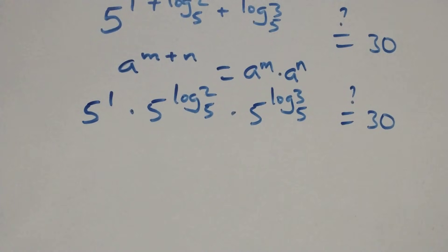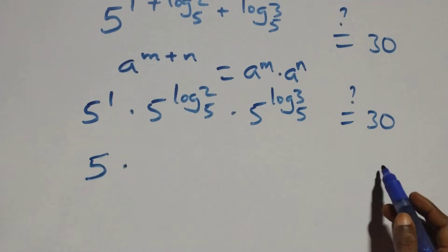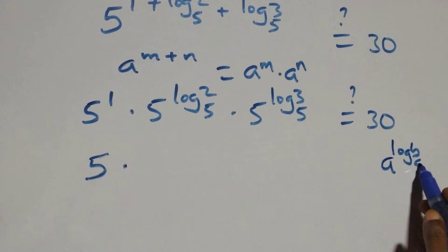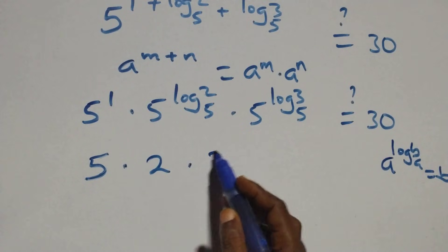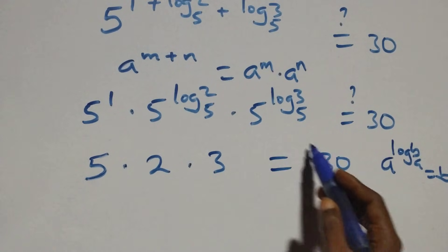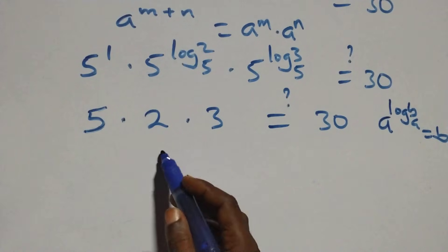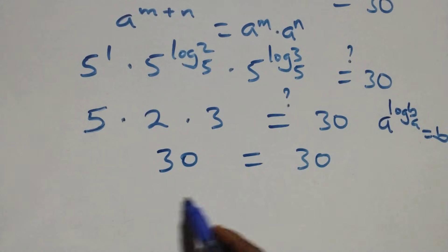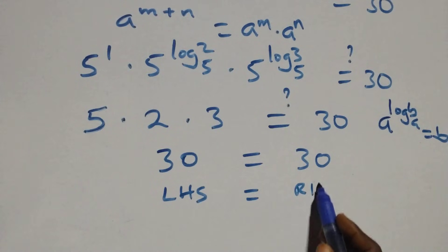5 raised to power 1 is 5. This follows the rule: a raised to power log_a(b) equals b. So we have 5 times 2 times 3 equals 30. That is: 5 times 2 is 10, and 10 times 3 is 30, which equals 30. Left hand side equals right hand side.